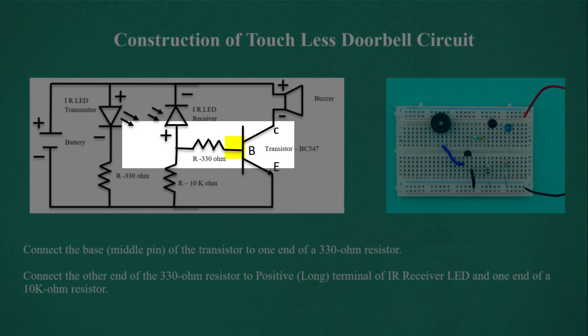Connect the base middle pin of the transistor to one end of a 330 ohm resistor. Connect the other end of the 330 ohm resistor to positive long terminal of IR receiver LED and one end of a 10k ohm resistor.